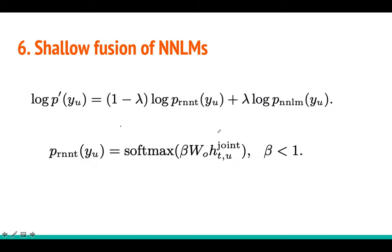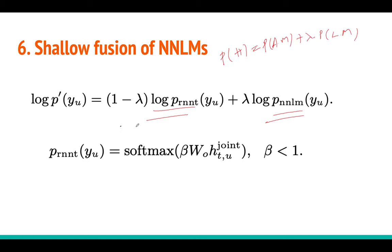Coming to the shallow fusion of neural network language models: it is very simple. In shallow fusion, you just fuse the probability scores of the acoustic model and the language model. In classical speech recognition, the final hypothesis probability equals the acoustic model probability plus lambda times the language model probability. Similarly here, you have P_RNNT — the RNN Transducer predictions — scaled by (1 - lambda), combined with the neural language model score. You then compute the argmax of the sequence that maximizes this combined score, and that gives your final hypothesis.